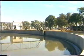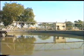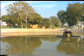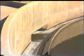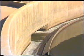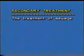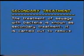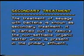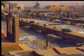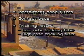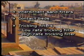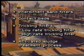Sewage treatment at the primary stage must ensure removal of sixty percent suspended solids and thirty to thirty-five percent BOD. The clarified sewage carrying mostly colloidal and dissolved solids passes out as effluent for secondary treatment. The treatment of sewage with bacteria is known as secondary treatment, carried out to remove non-settlable organic matter present in the primary effluent. The various methods include intermittent sand filters, contact beds, low-rate and high-rate trickling filters, and the activated sludge treatment process.